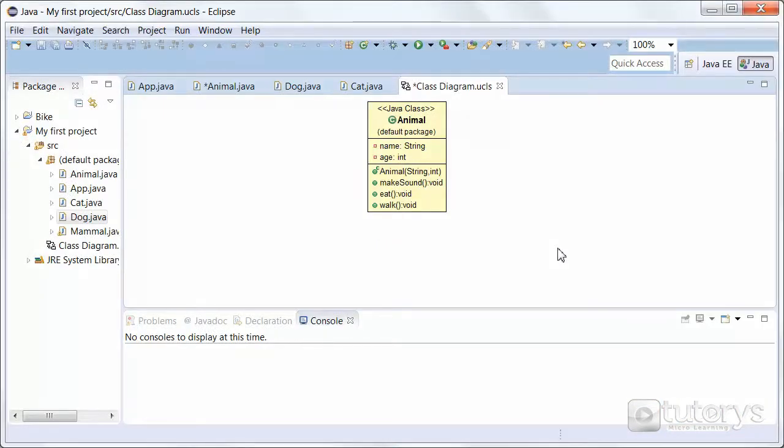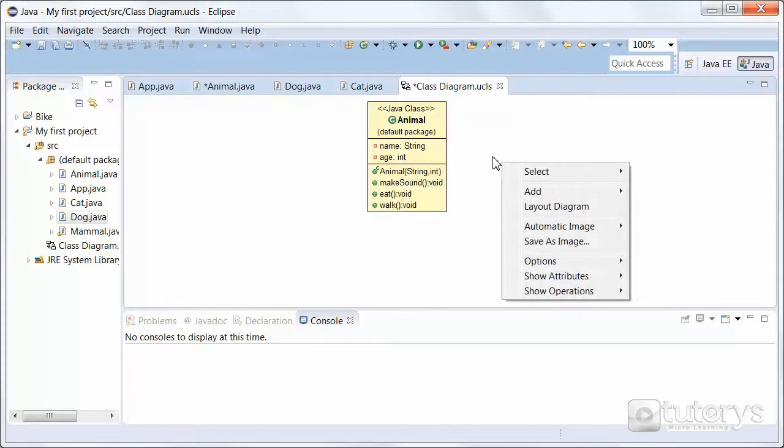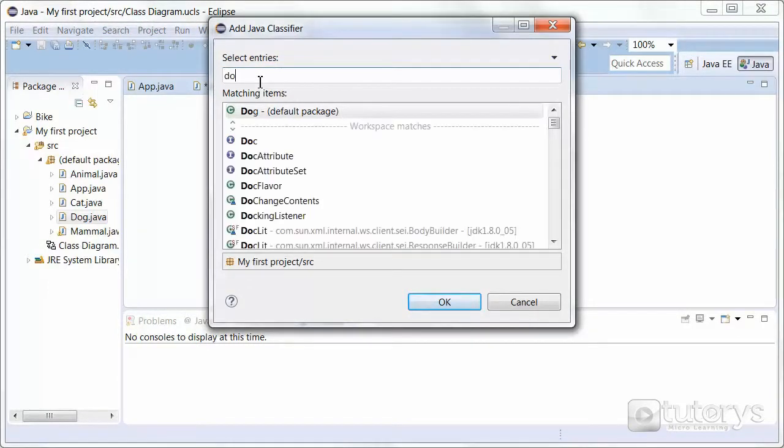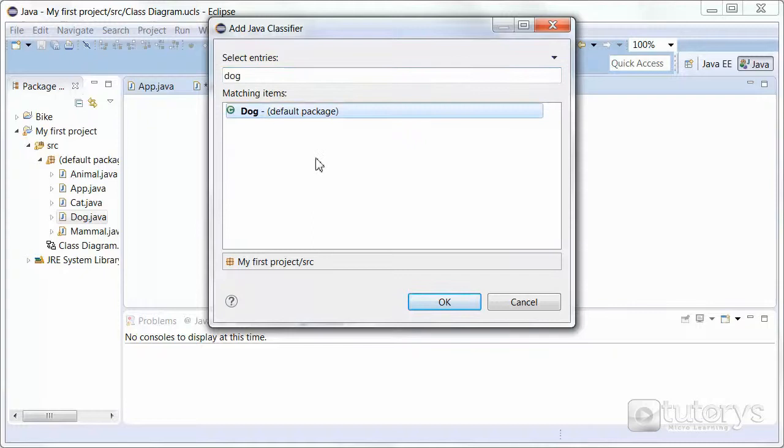Here we are in Eclipse. As you can see, we've already modeled our object animal here. To be able to model an interaction, we obviously have to have more than one object or more than one class. What we're going to do is add a new class, Java classifier, and then we're going to add the dog class.